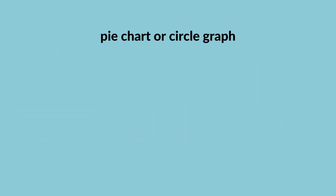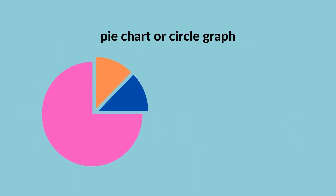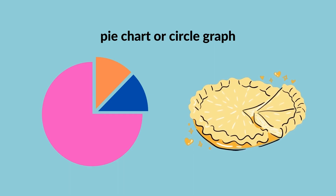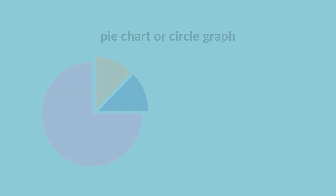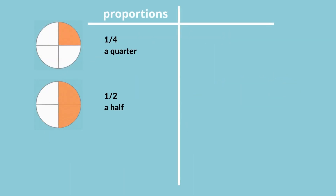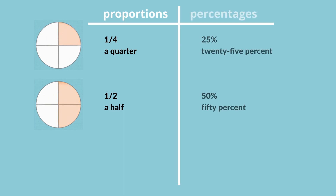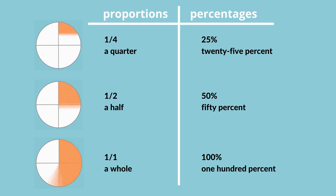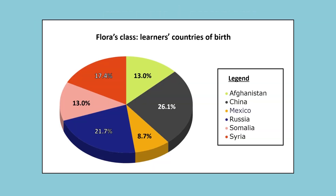A pie chart, also called a circle graph, resembles a pie with slices. It is used for showing proportions and percentages of a whole. This pie chart represents countries of origin among the students in Flora's class.